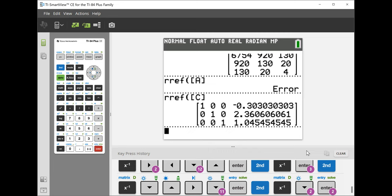Negative 0.3030 repeating, 2.36 then 06 repeating, and 1.045 repeating.